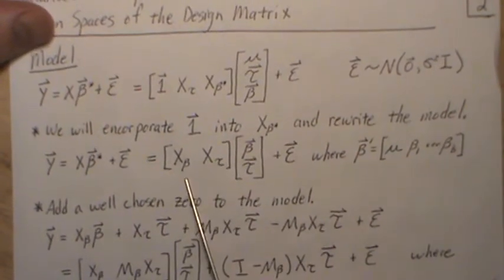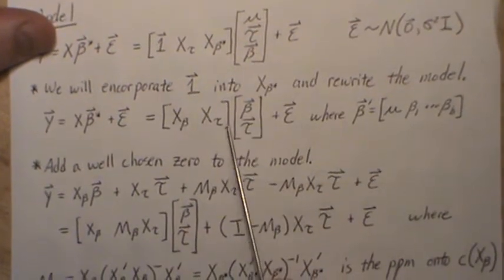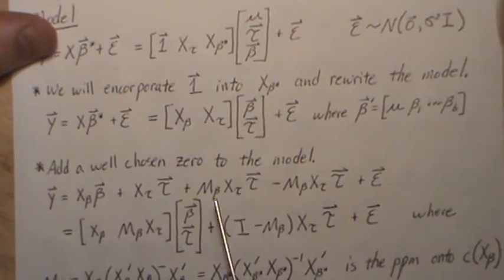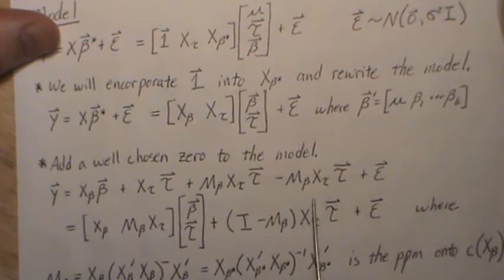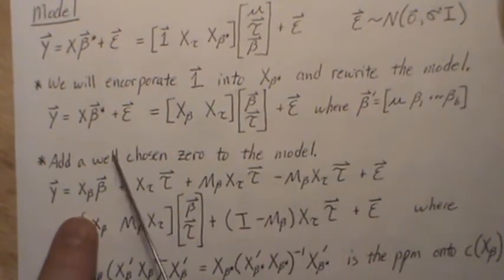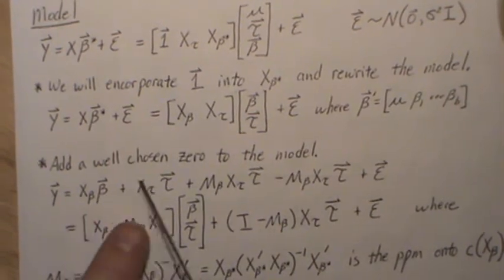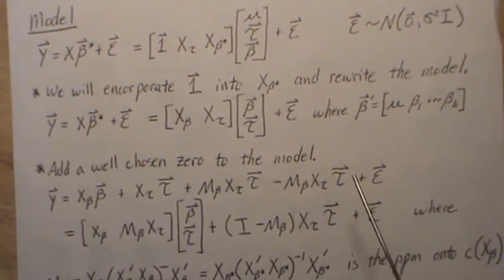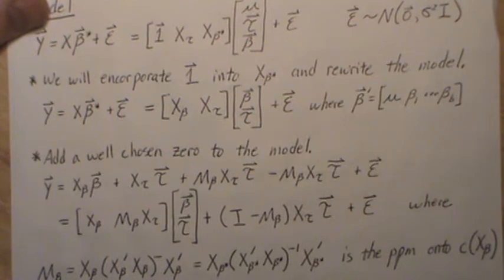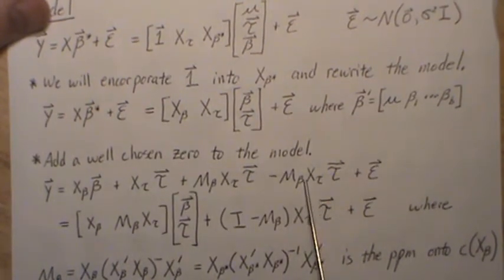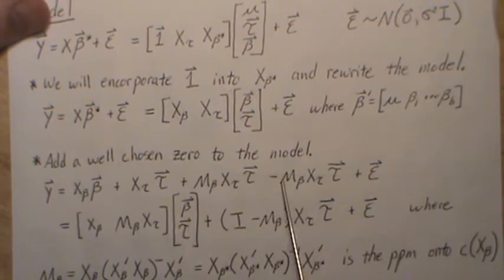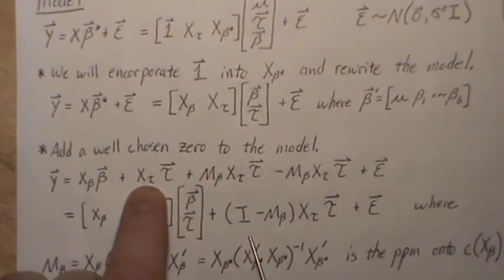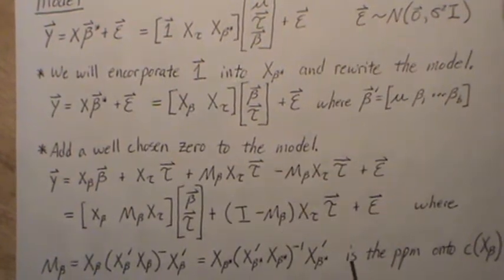When we multiply this out, we get X_beta times beta and X_tau times tau. Now we're going to add what's called a well-chosen zero — we add a quantity and subtract the same quantity — so y equals X_beta·beta + X_tau·tau plus this added zero, plus epsilon. The model has not changed. We take this X and group terms, then factor out a tau and an X_tau, so what's left over is the identity matrix minus M_beta.